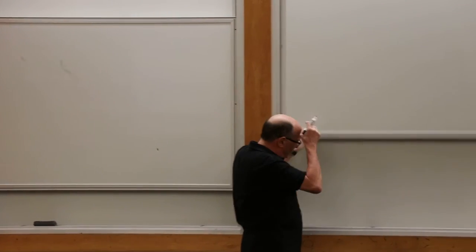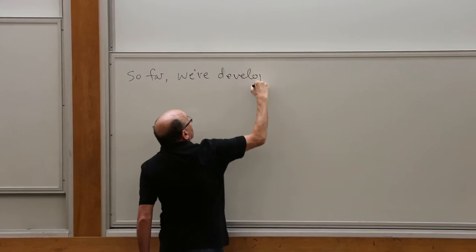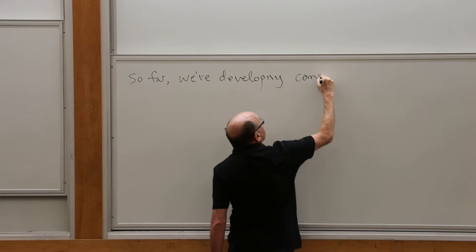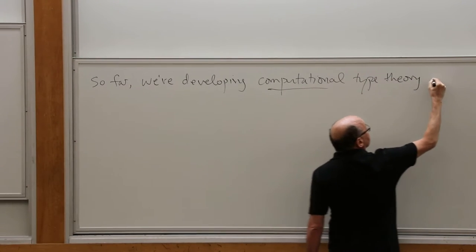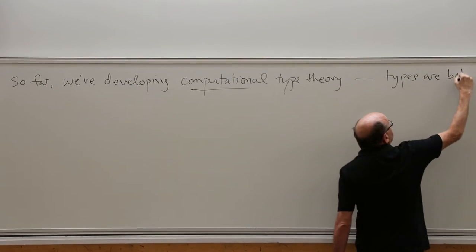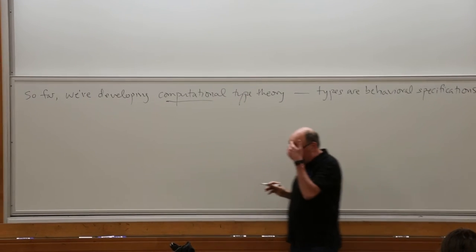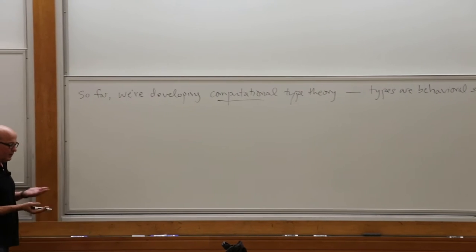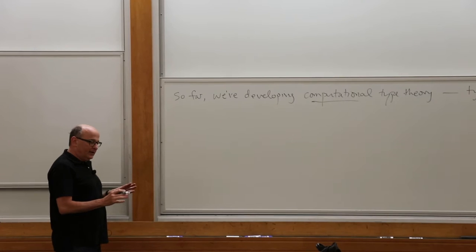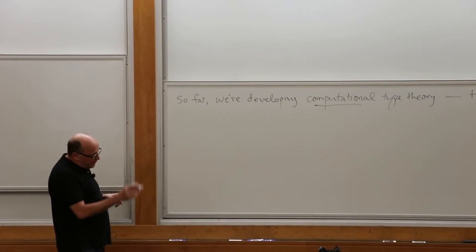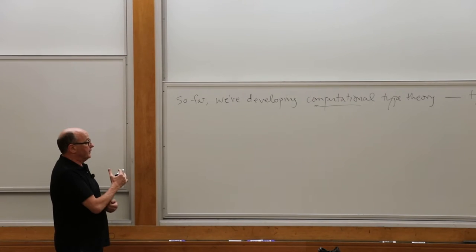So what I want to do is figure out where we were. What we've been doing so far is developing what is sometimes called computational type theory, which means developing the notion of types from a computational perspective. The view was that types are behavioral specifications. I'm a computer scientist interested in using types as specifications, wanting to know what things mean from a computational point of view. I'll bring it around and connect it with formal type theory today, using that as a jumping-off point to talk about identifications and paths, which I'll start next time.